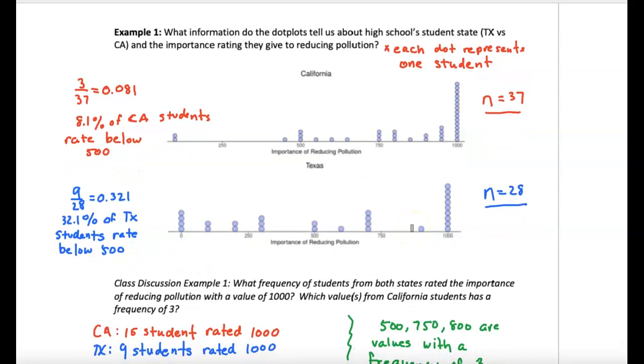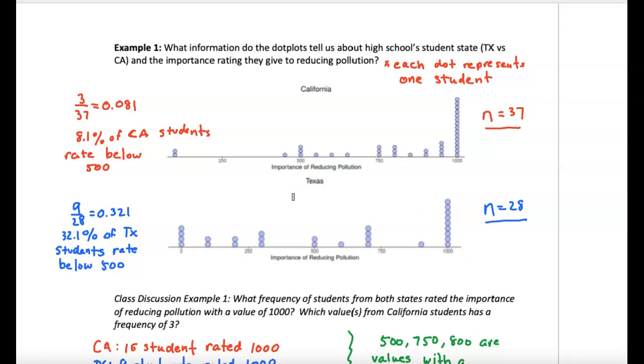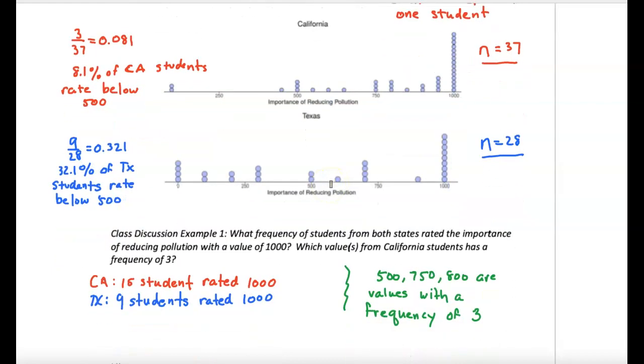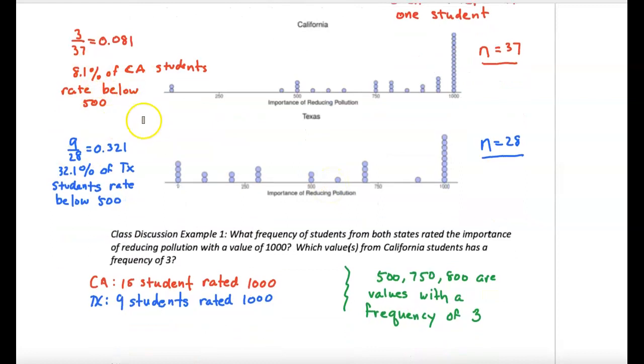And then you can see some calculations, but you will see the dots. Important in the dots is that a dot represents an individual person. So you'll see 37 dots or 28 dots. And that helps us see the distribution, the frequency. We can see the frequency. And then you can do calculations whether you want relative frequencies. You can say 8.1% of California students rate below 500. And there's your 500. There are three dots below 500 and so forth.